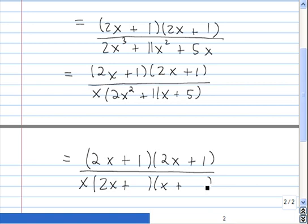Because of the 11x, I know that the outside product plus the inside product needs to be 11x. So I think I'm going to put my 5 there and my 1 there.